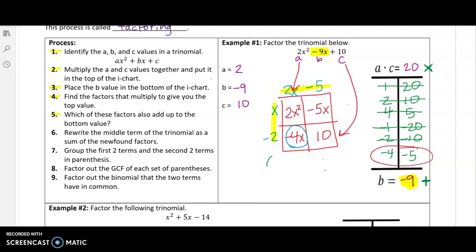So x minus two is one of them. And keep in mind, it doesn't matter which one goes first. And then the other one was two x minus five.